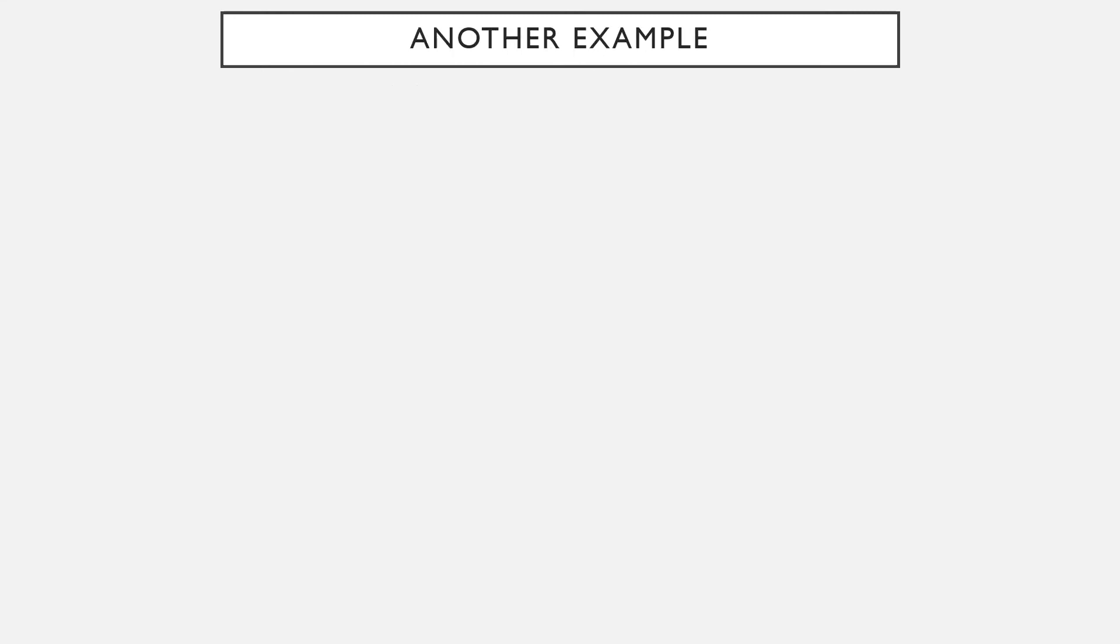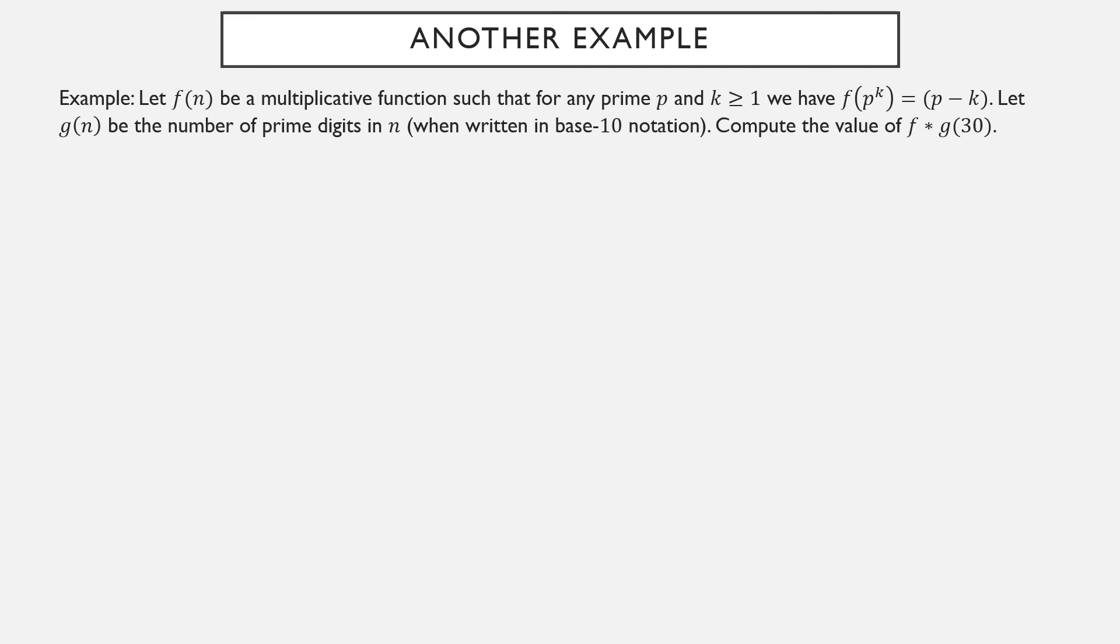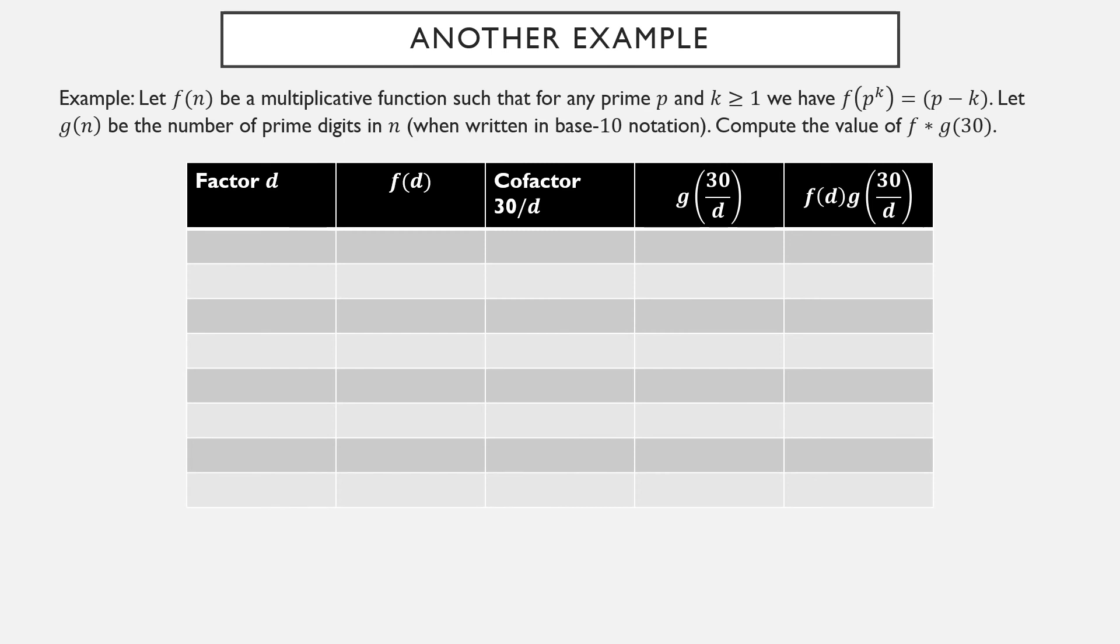Now let's take a look at one more example. Suppose f(n) is a multiplicative function, and all I know about it is that for any prime and any positive power of that prime, f(p^k) is p - k. Let g(n) be the number of prime digits in n. So if you write the number n in base 10 and look at the digits, ask how many of those digits are prime numbers. Remember that one is not a prime number. Compute the value f star g of 30. So f and g are both unusual functions, possibly unlike you've ever worked with before, but still we'll hack through it.